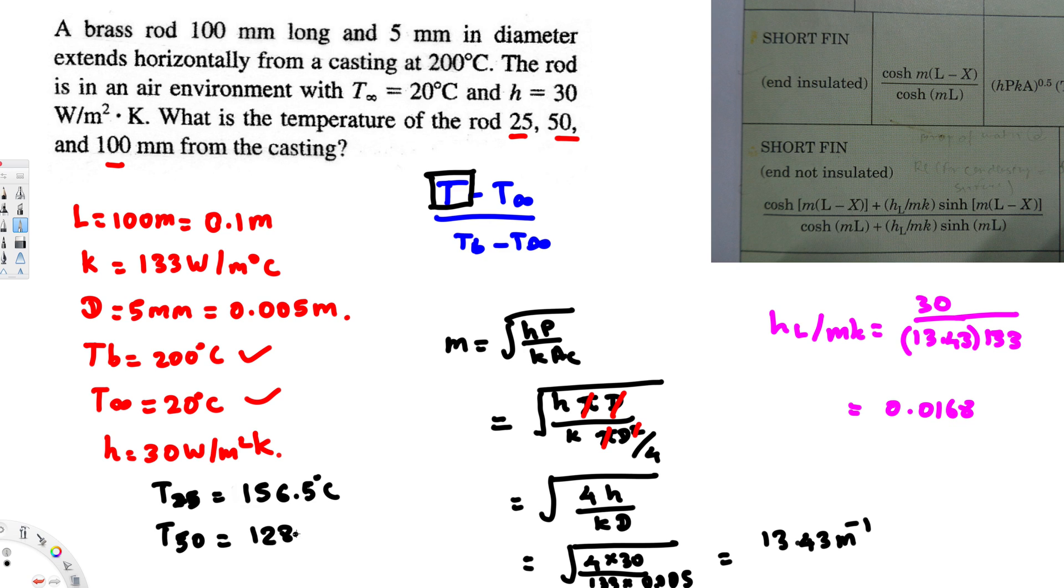At 100 millimeters, because this is length we're talking about, you will get 107.0 degrees Celsius.